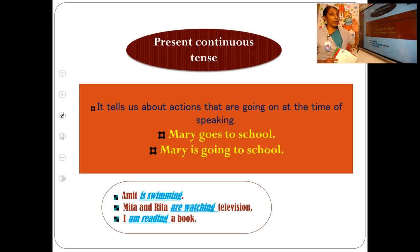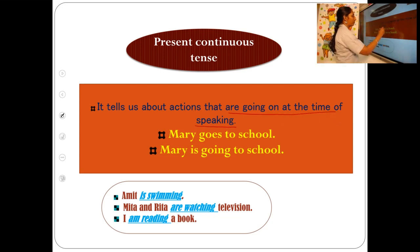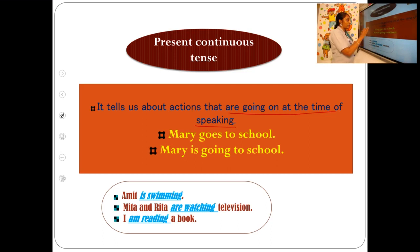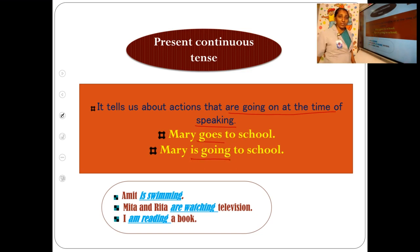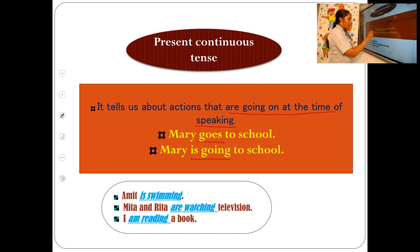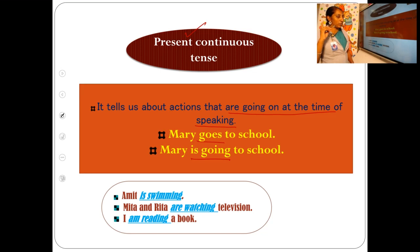What is the function of present continuous tense? It tells us about actions that are going on at the time of speaking. For example: 'Mary goes to school' versus 'Mary is going to school.' The verb in the first sentence is 'goes' — simple present tense. The verb in the second sentence is 'is going' — present continuous form.